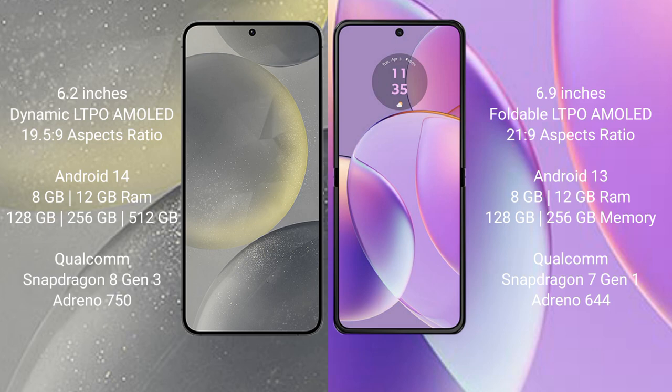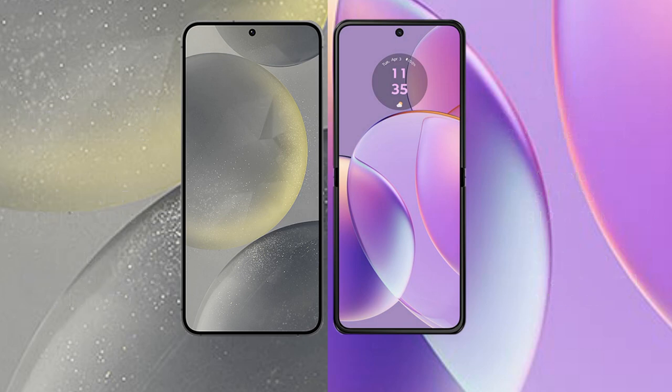Samsung Galaxy S24 features a Qualcomm Snapdragon 8 Gen 3 Processor and GPU Antino 750. Motorola RAZR 40 comes with 8GB, 2LGB RAM and 128GB, 256GB internal storage, Qualcomm Snapdragon 7 Gen 1 Processor and GPU Antino 644.